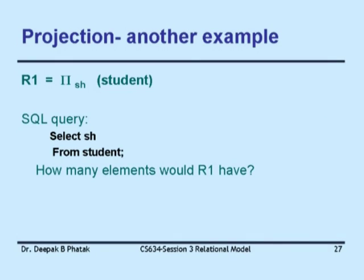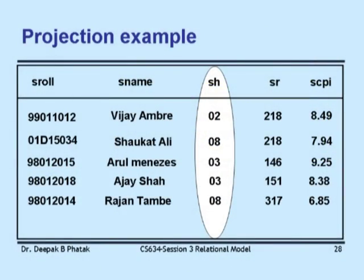We can combine selection and projection: pi(S-name) applied to sigma(S-CPI > 9 AND SH = 8)(student) — first select rows satisfying the predicate, then project only S-name from the result. Since each operator produces a relation, operators can be composed. The corresponding SQL is: 'SELECT s_name FROM student WHERE s_CPI > 9 AND sh = 8' — giving only names of students from hostel 8 with CPI greater than 9. This is the power of SQL expression.